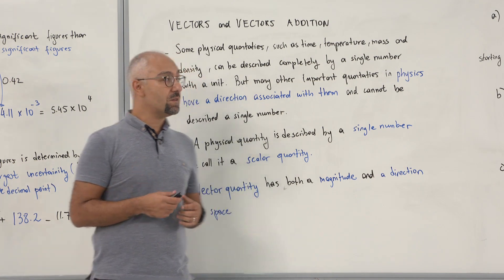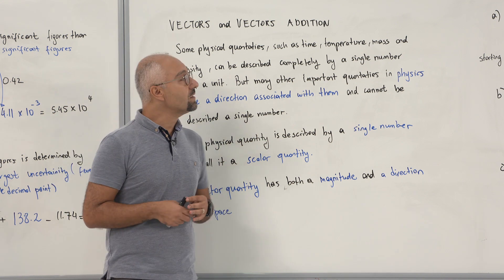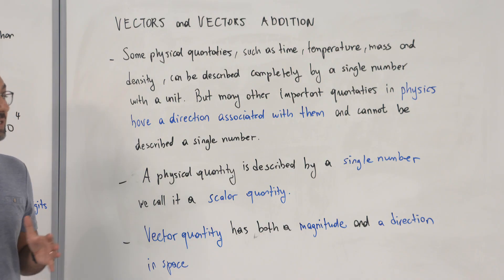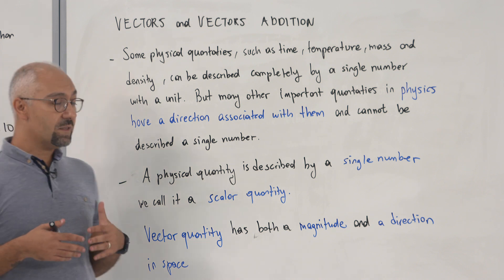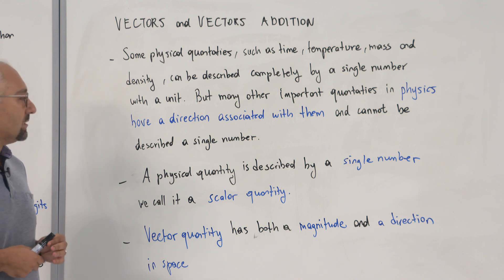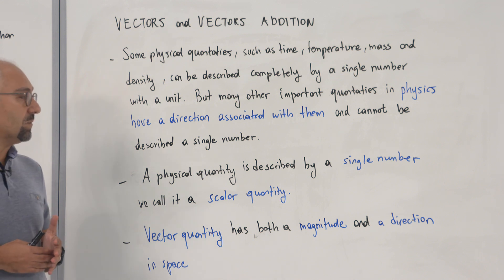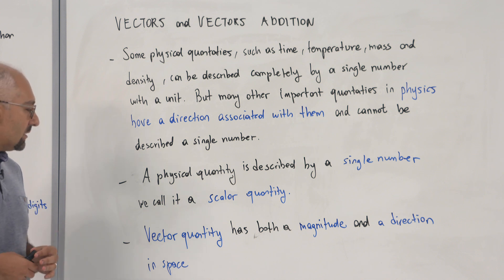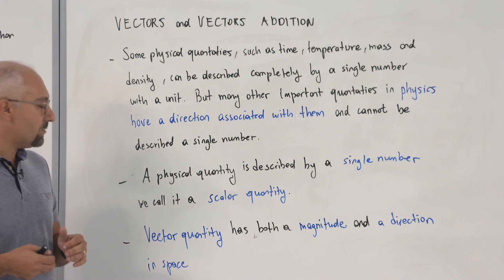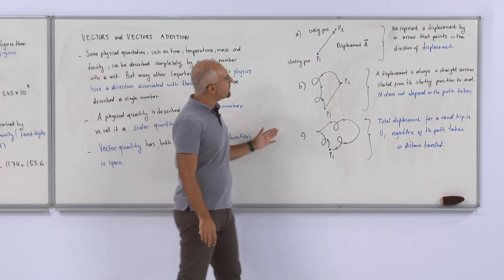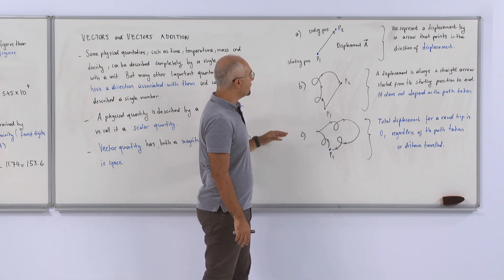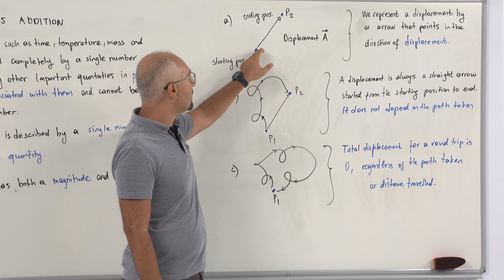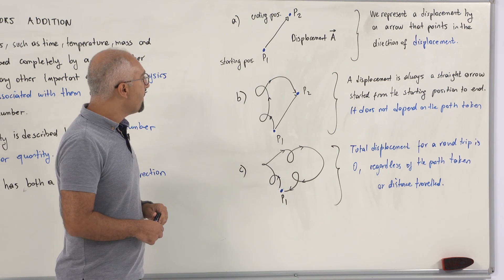Since we discussed numbers and uncertainty, we have to understand physical quantities. Physical quantities such as time, temperature, mass, or density can be described completely by a single number — these are scalar quantities. On the other hand, some important quantities in physics have a direction associated with them and cannot be described by a single number alone — these are vector quantities, defined by both magnitude and direction in space. For example, the displacement from starting position P1 to ending position P2 is represented by an arrow — that is my vector.